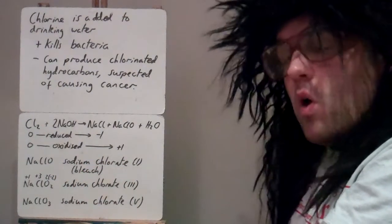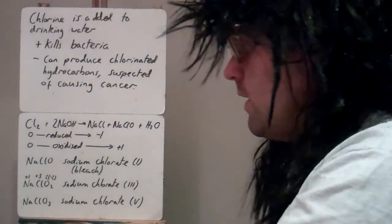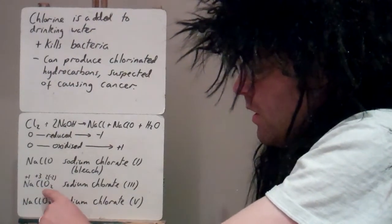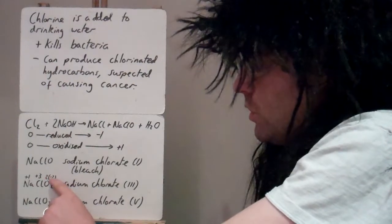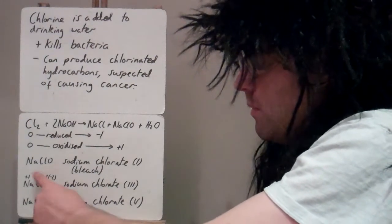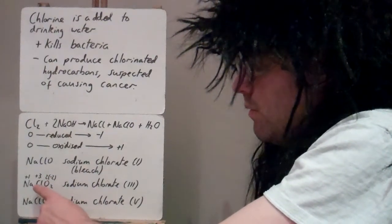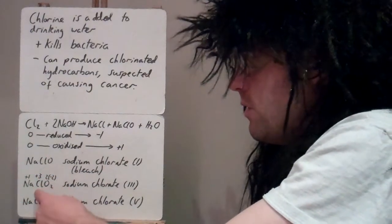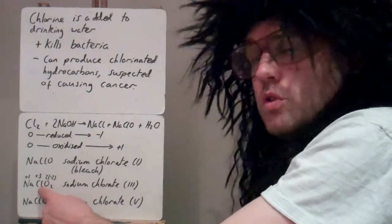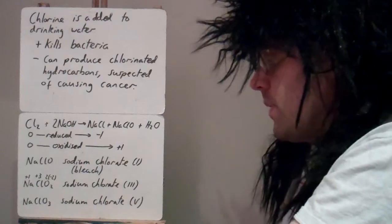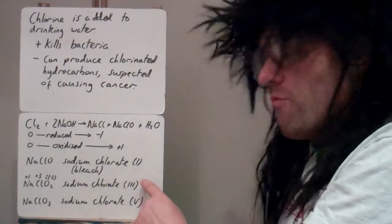We can get different types of sodium chlorate. Here we've got sodium which is plus one, oxygen is minus two, there's two of them so that's minus four. To be neutral overall, the chlorine must have an oxidation number of plus three, so here we've got sodium chlorate three.